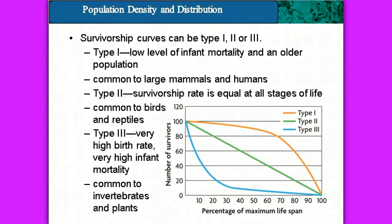The survivorship curves can be graphed and we can identify them as being either type 1, 2, or 3. Type 1 is a low level of infant mortality and an older population. Look at the type 1 line — that's the orange line here. This is really common to large mammals and humans.